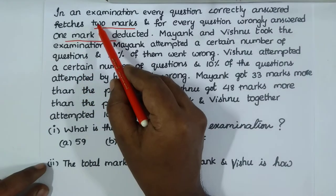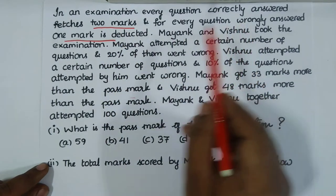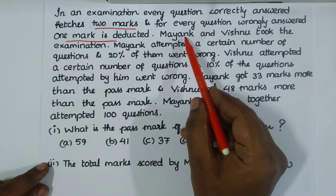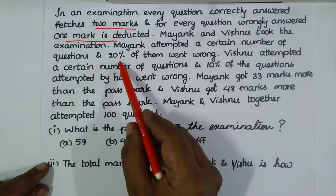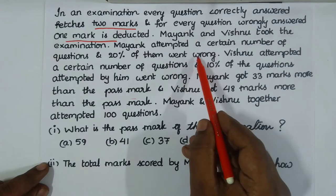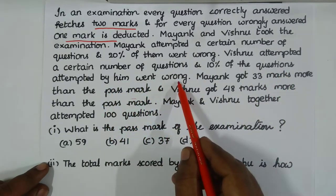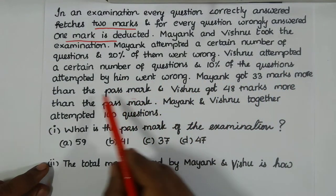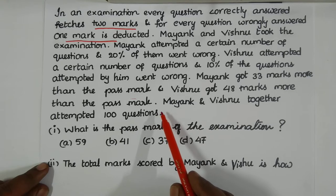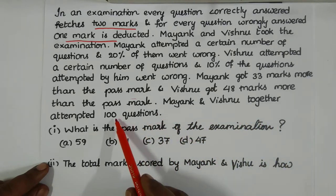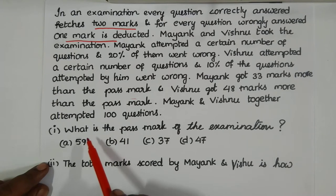In an examination, every question correctly answered fetches two marks, and for every question wrongly answered one mark is deducted. Two candidates, Mayank and Vishnu, took the examination. Mayank attempted a certain number of questions and 20% of those went wrong. Vishnu attempted a certain number of questions and 10% of those went wrong. Mayank got 33 marks more than the pass mark, and Vishnu got 48 marks more than the pass mark.